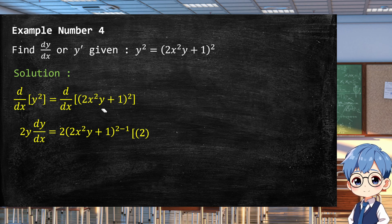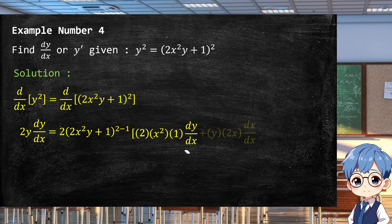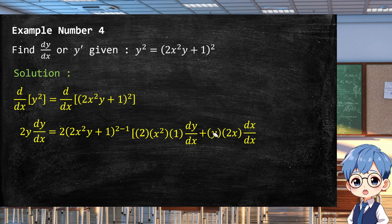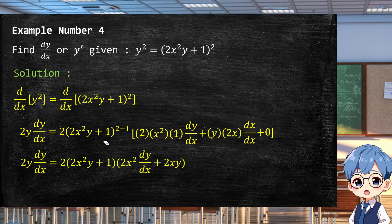We write the coefficient 2 first. With u = x² and v = y, the product rule u·dv + v·du gives: x²·(1)·dy/dx plus y·(2x)·dx/dx. The derivative of the constant 1 is zero. After cancelling dx/dx, we simplify by rewriting and cancelling terms.